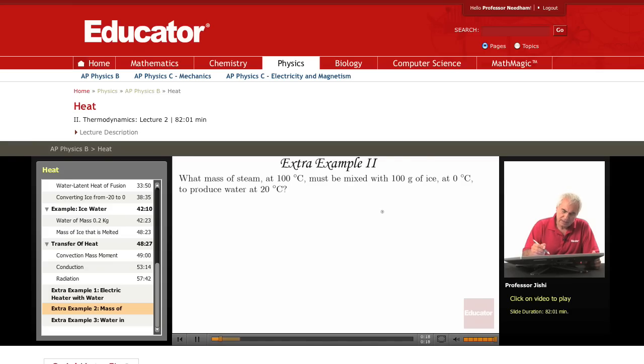So I have ice at zero. I have steam here at 100. I have 100 grams here, and here I have mass of steam unknown, that's my unknown.